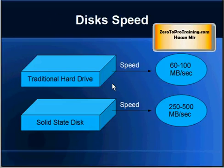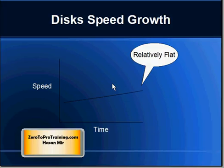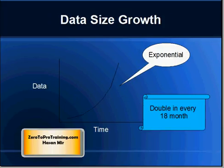We understand that Big Data is creating large files, but what is the problem and where does Hadoop fit in? The disk speed of a traditional hard disk can read at 6,200 megabytes per second. With solid state disks, the speed goes up to 250 to 500 megabytes per second — it is a breakthrough, but not as big a breakthrough as we have made in other areas. Relative to the progress we have made elsewhere, the speed of the disk has remained relatively flat. Meanwhile, the size of data has been growing exponentially — every 18 months, the data we have collected doubles in size.